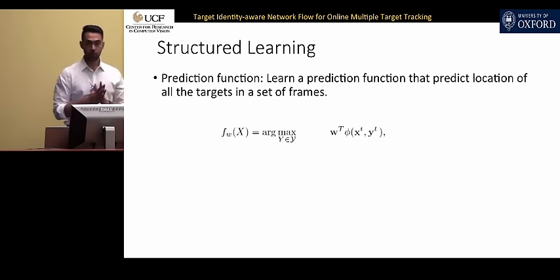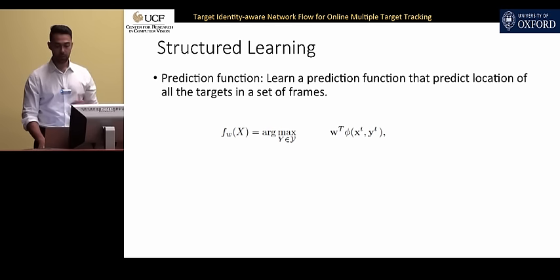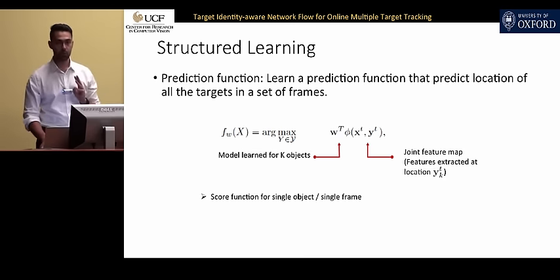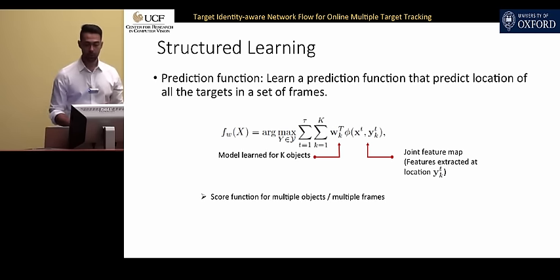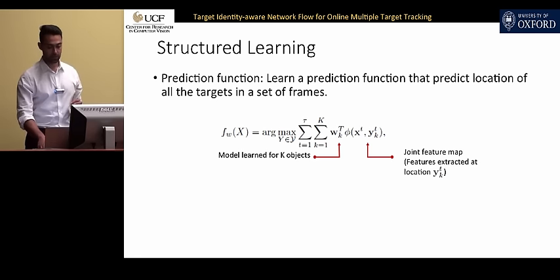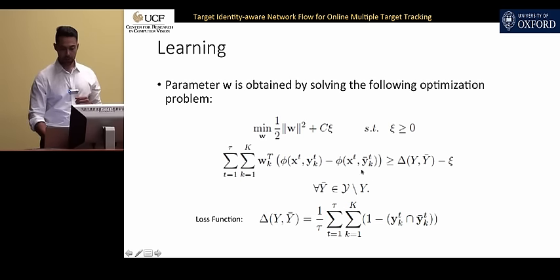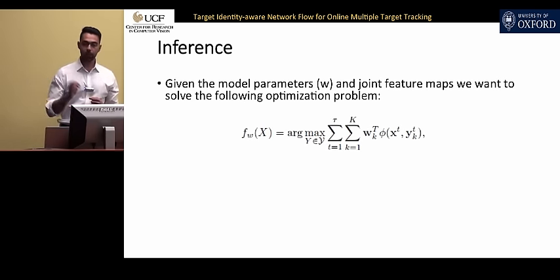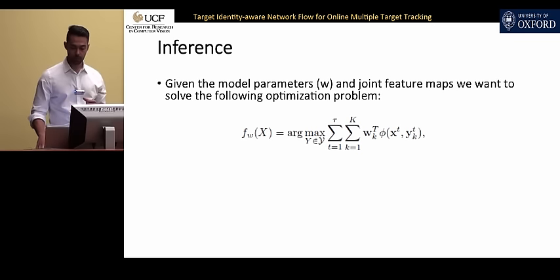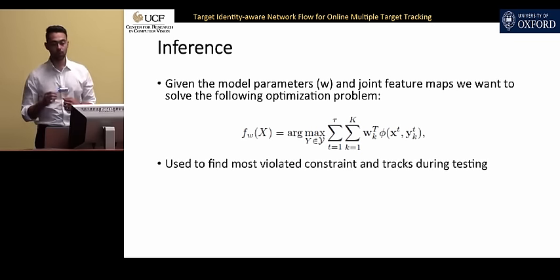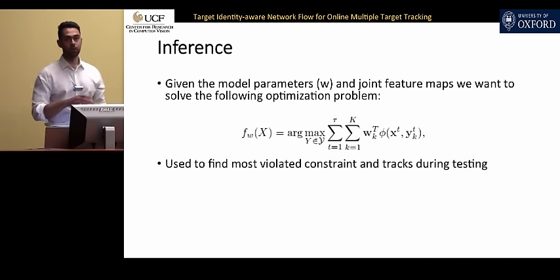In our structural learning framework, the goal is to learn a prediction function that predicts the location of targets in a set of frames. For one target and one frame, the score function is defined with W as model parameters and phi as the joint feature map. In our case, with multiple objects and multiple frames, we have a double summation over the number of frames and the K objects in the scene. To find parameter W, we solve an optimization problem where Y-bar is all dense candidate windows used during training, Y is the positive sample, and a corresponding loss function is defined using bounding box overlap. For the inference function with fixed W, we solve the same optimization to find the most violated constraint during structural learning.